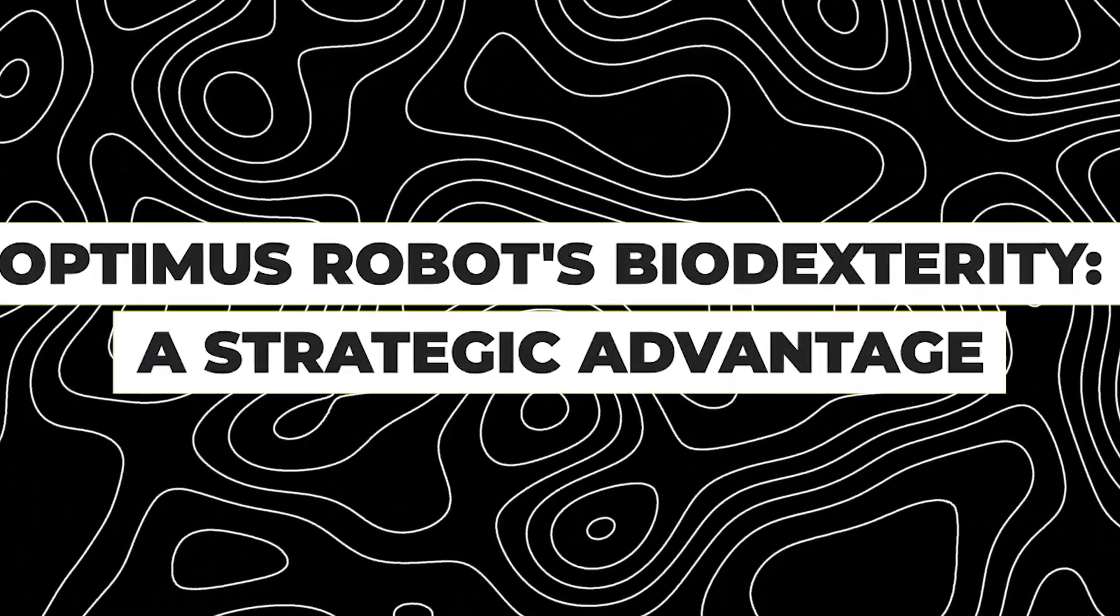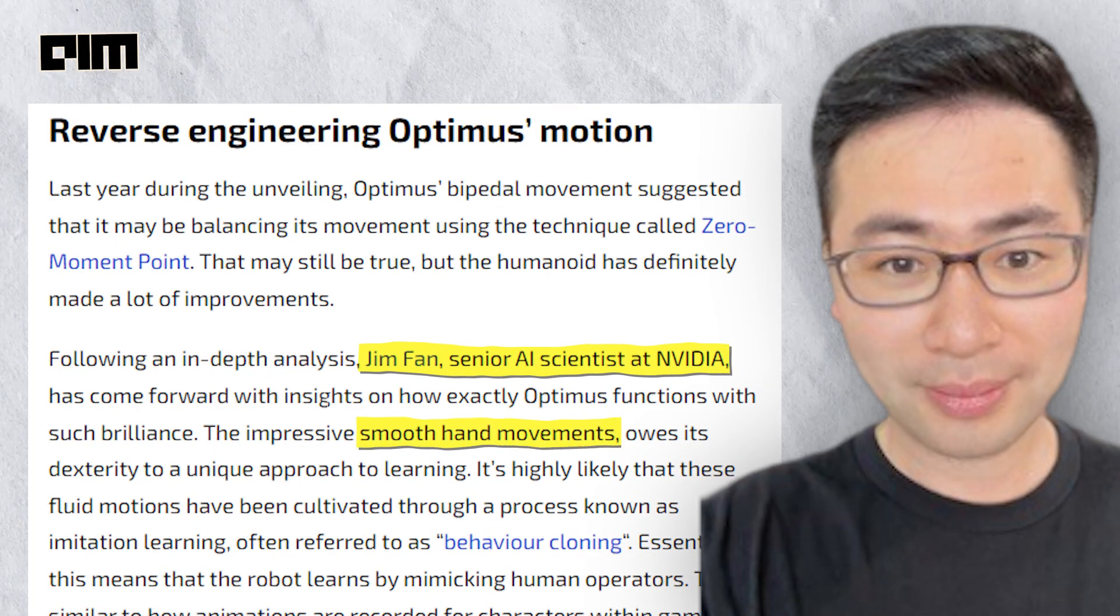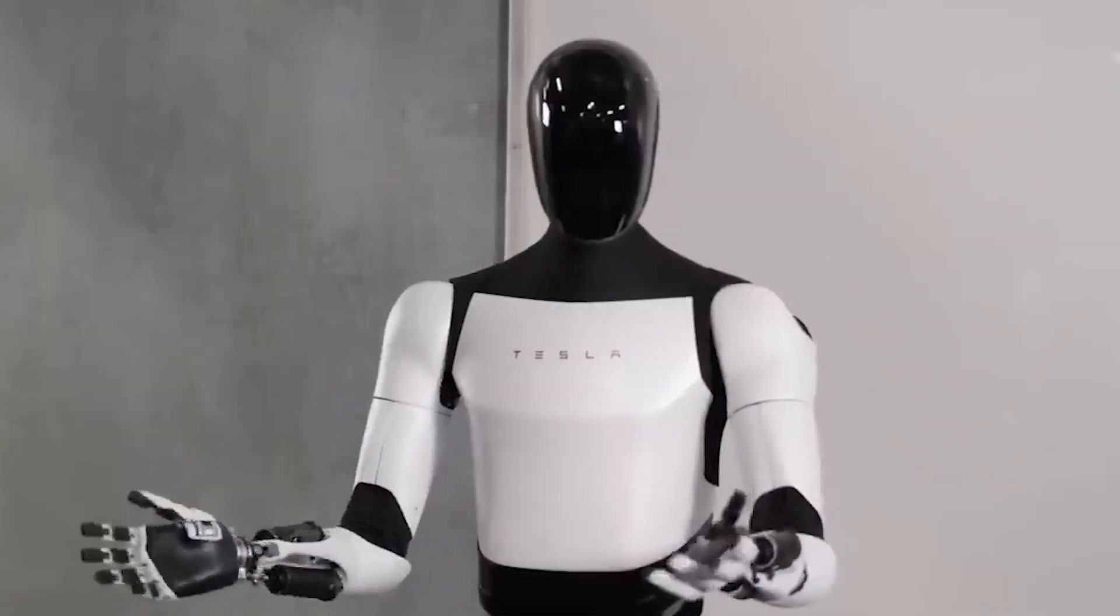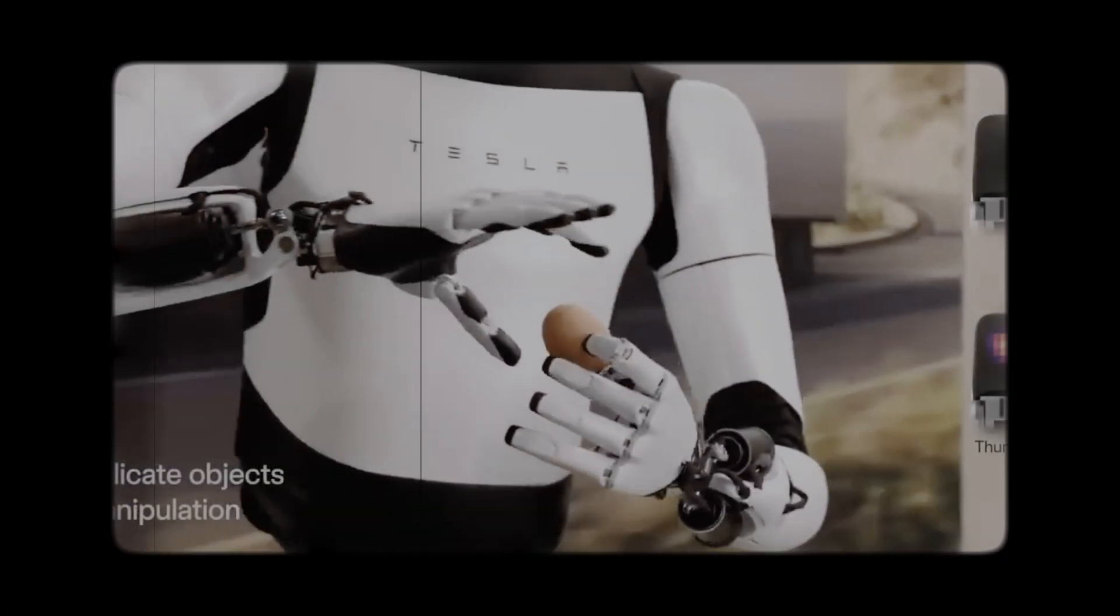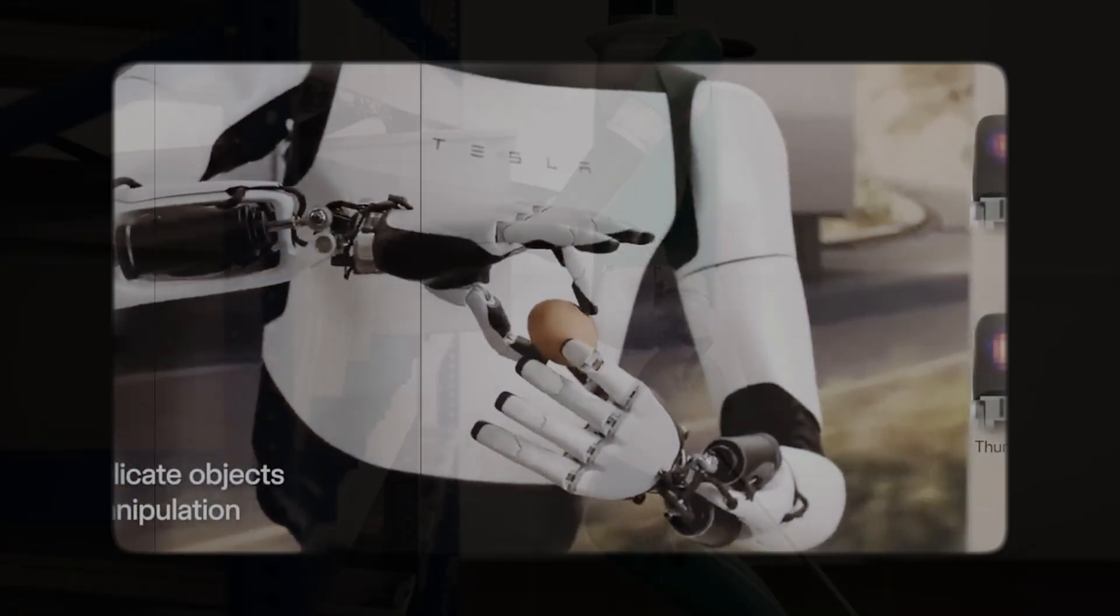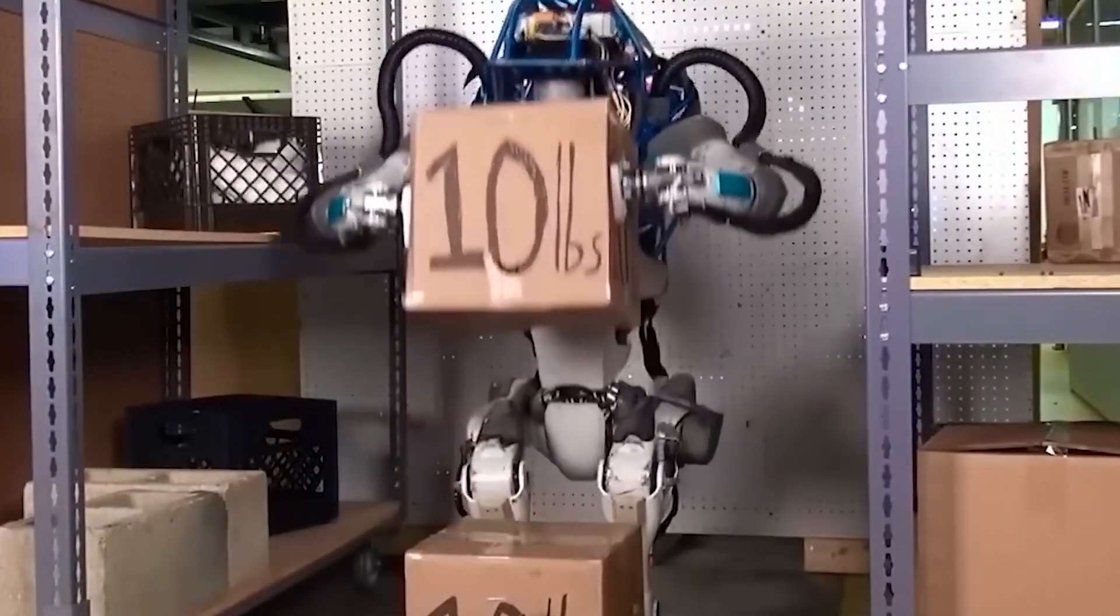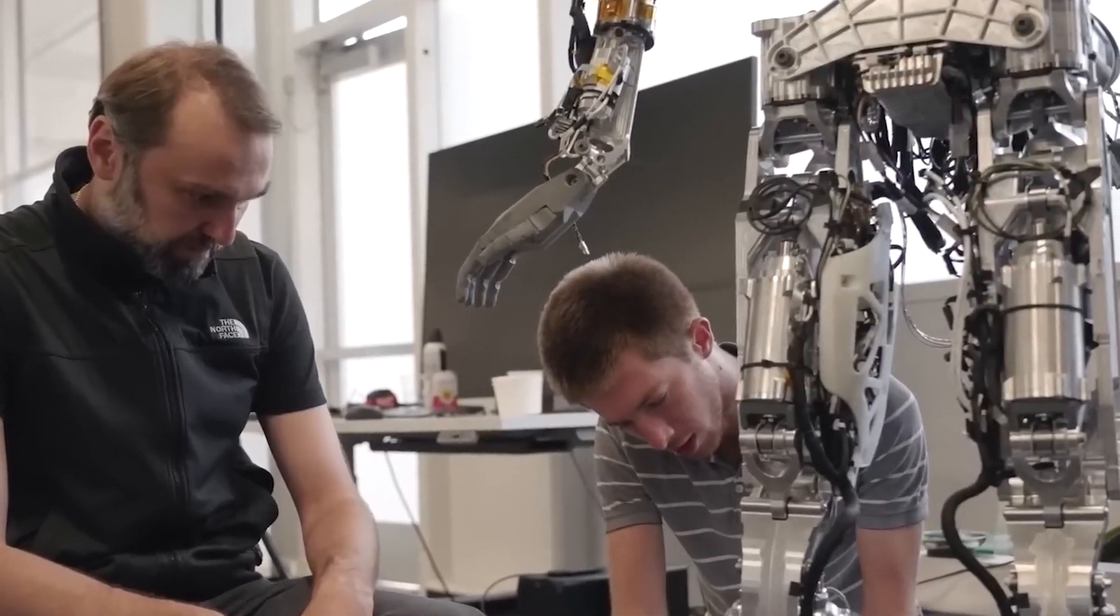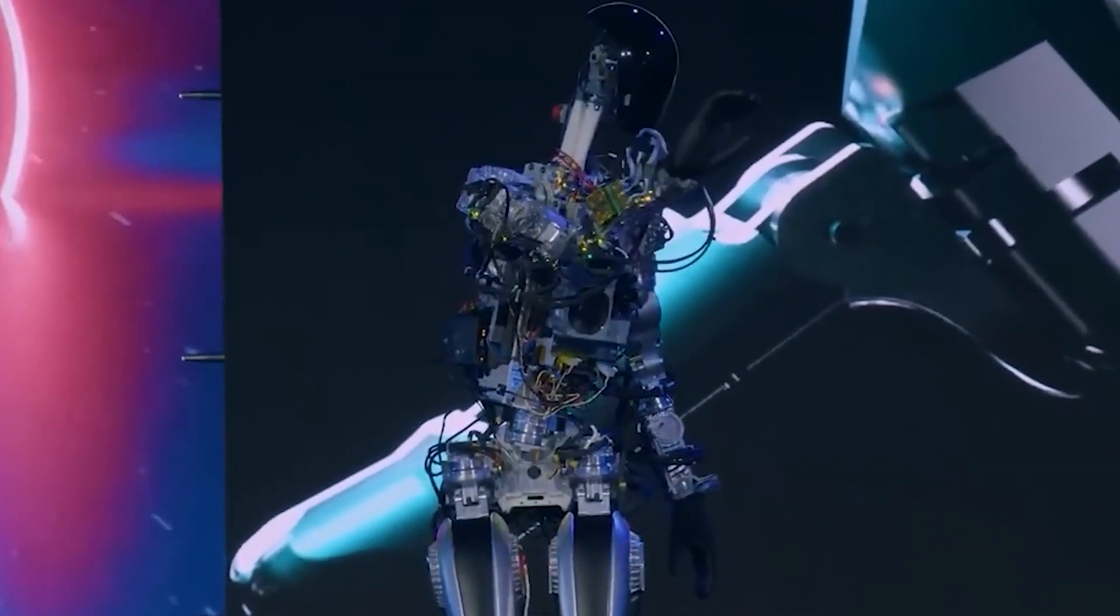Jim Fan, a senior AI scientist at NVIDIA, has highlighted Optimus Robot's strategic advantage in adopting a human-like structure. The robot's five-finger hands, combined with machine learning capabilities, make it superior in daily tasks when compared to robots with gripper-style hands, such as Boston Dynamics Atlas. The decision to closely imitate human anatomy ensures a seamless integration of tasks and actions, positioning Optimus as a versatile and advanced robotic solution.